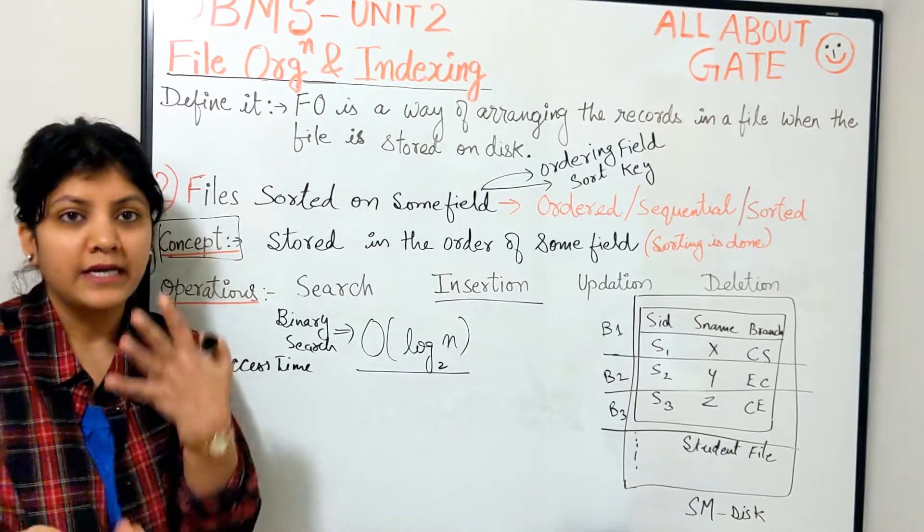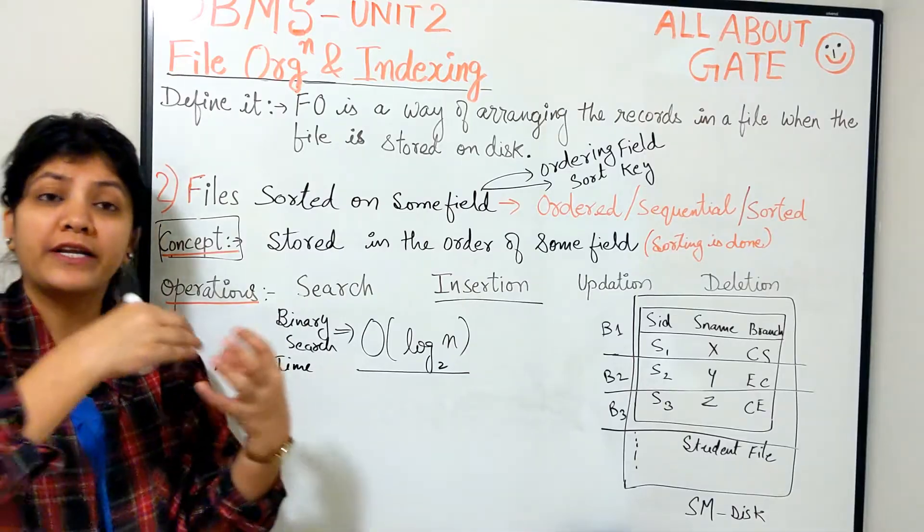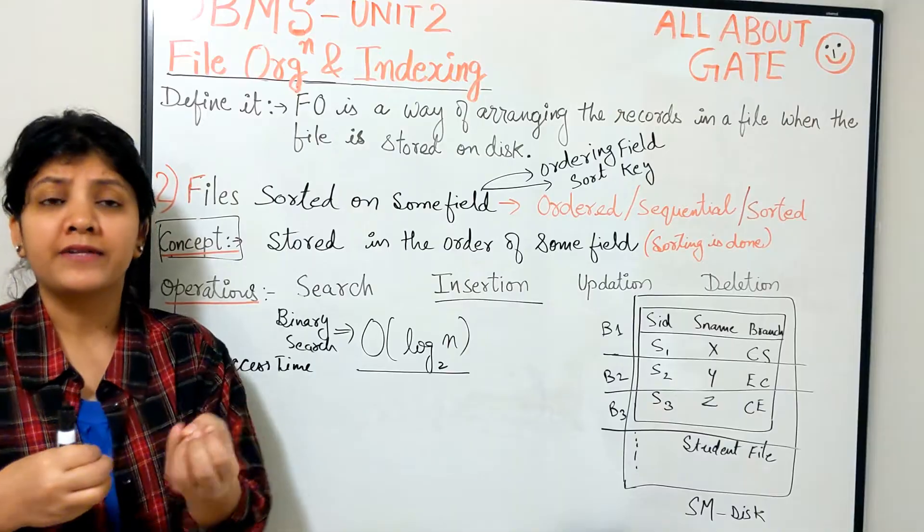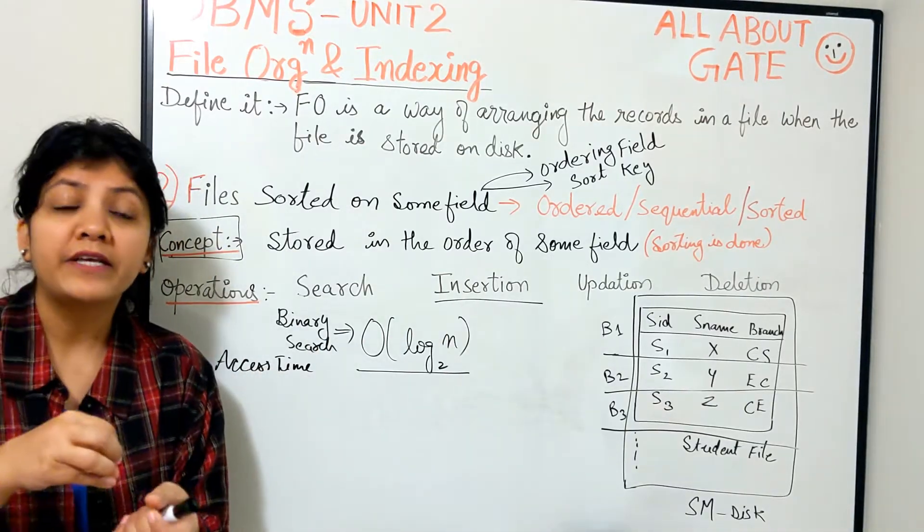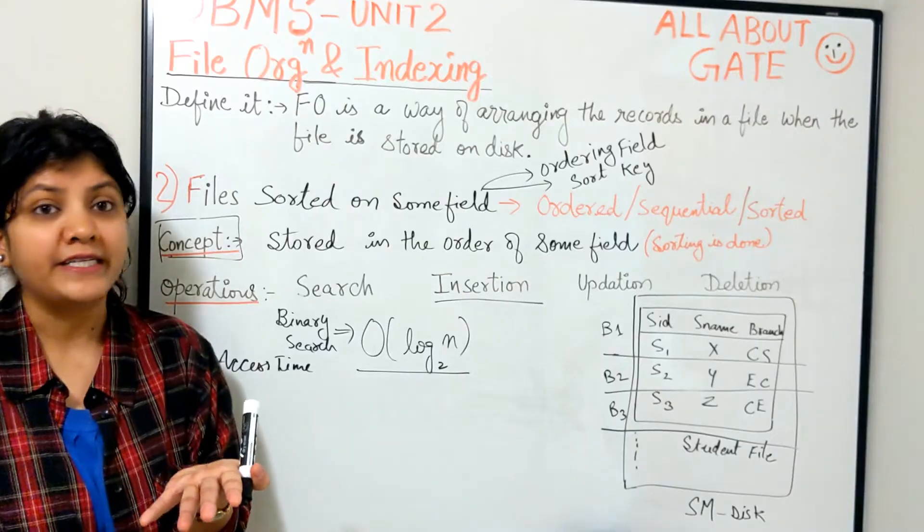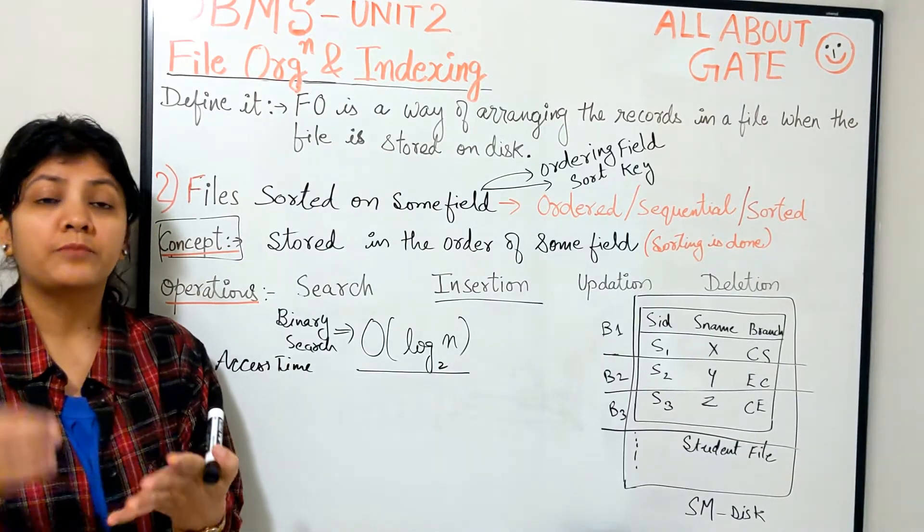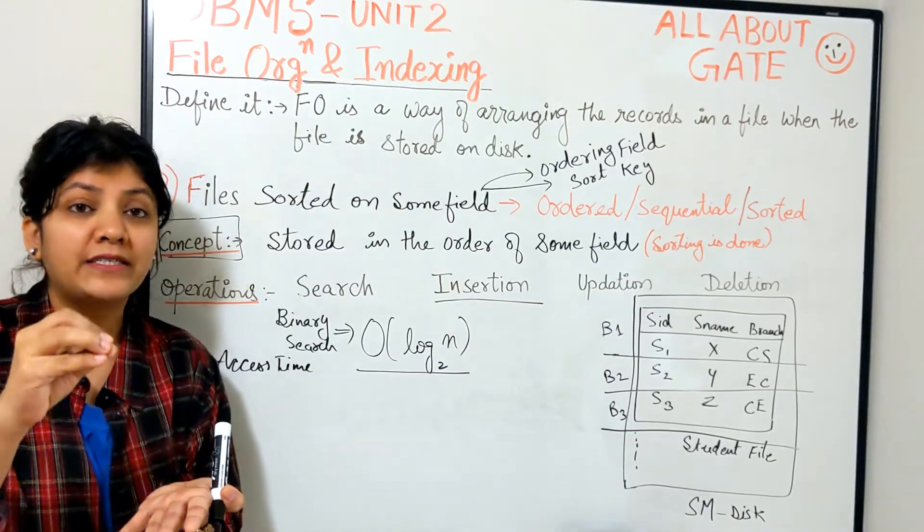It makes access faster because whatever record you are trying to look for, you will look at the field value of that particular record, compute the value by the help of hash function, and it will go particularly to that block only and access that. That is hash-based. Now somebody might be thinking which organization is good, which organization is bad. None of the organization could be considered as the worst or the best. It is actually dependent on your application that you are going to run over the data. So DBMS provides lots of types of file organization.